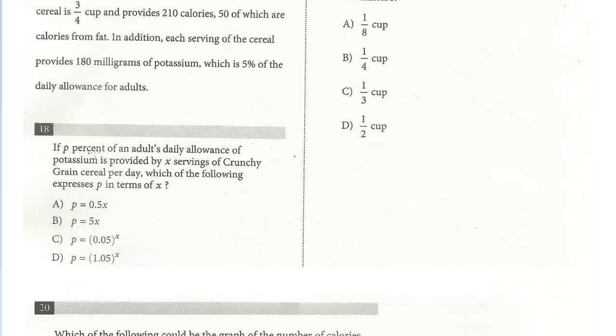So the first question, 18: if P% of an adult's daily allowance of potassium is provided by X servings of crunchy grain cereal per day, which of the following expresses P in terms of X? And so here we're told that 5% is one serving, and we want to express whatever that percent would be of the adult's daily allowance based on the number of servings.